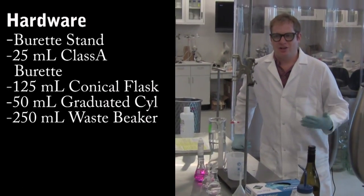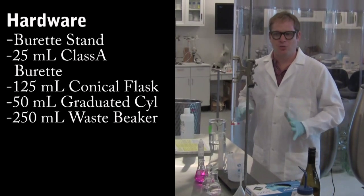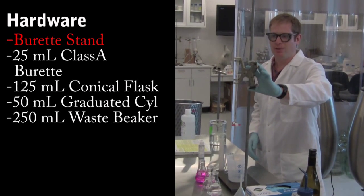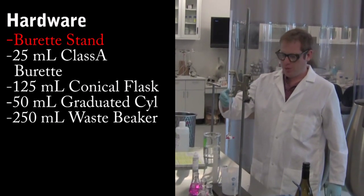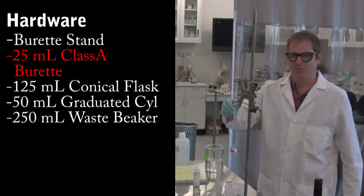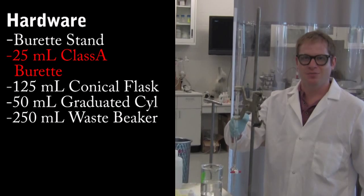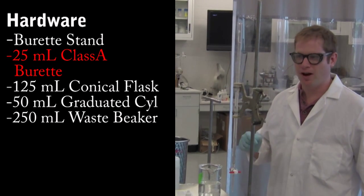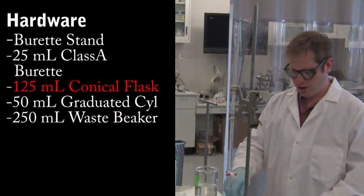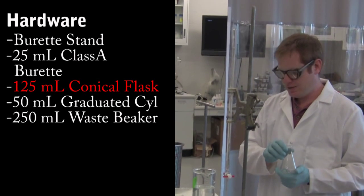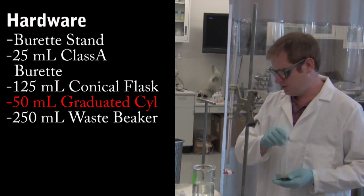Okay, what do we need to get started? Well, for the hardware, we're looking at a burette stand with a burette clamp, and a 25 mil Class A burette, accurate to .05 milliliters. We need a 125 milliliter flask, 50 milliliter graduated cylinder, and that should do with a waste bucket.